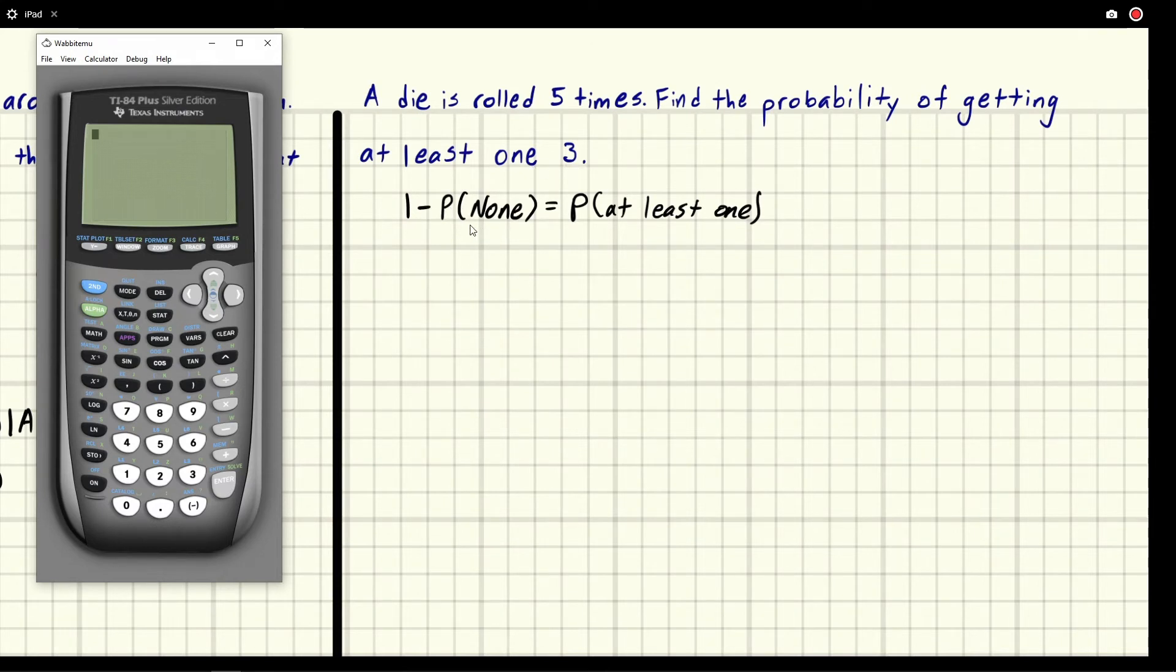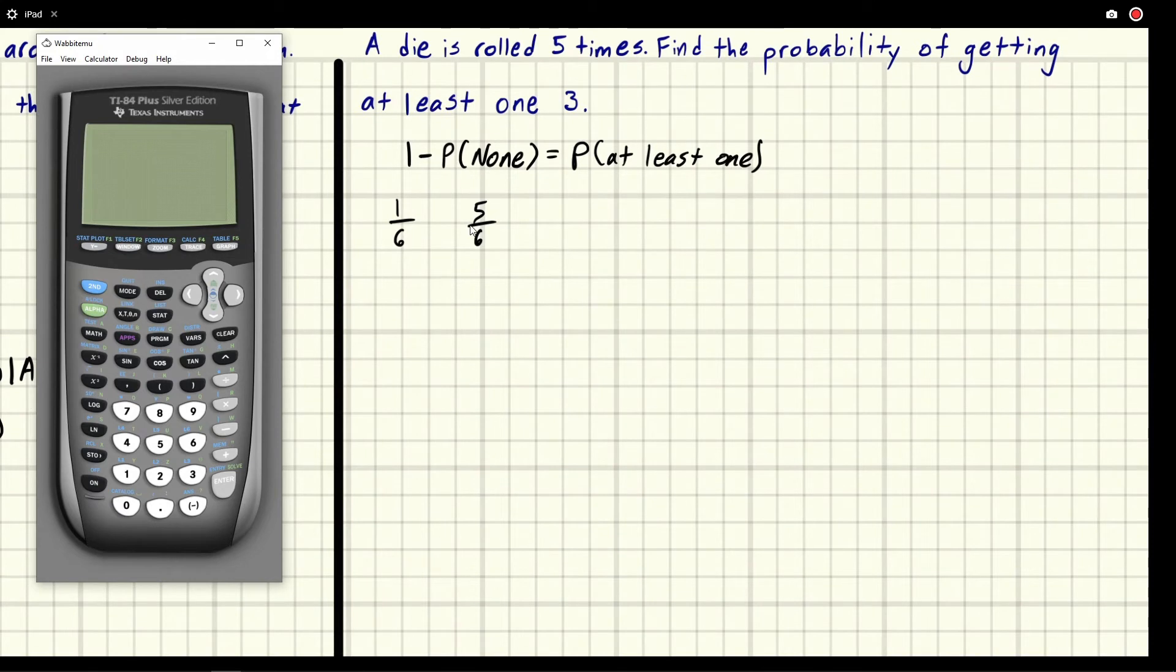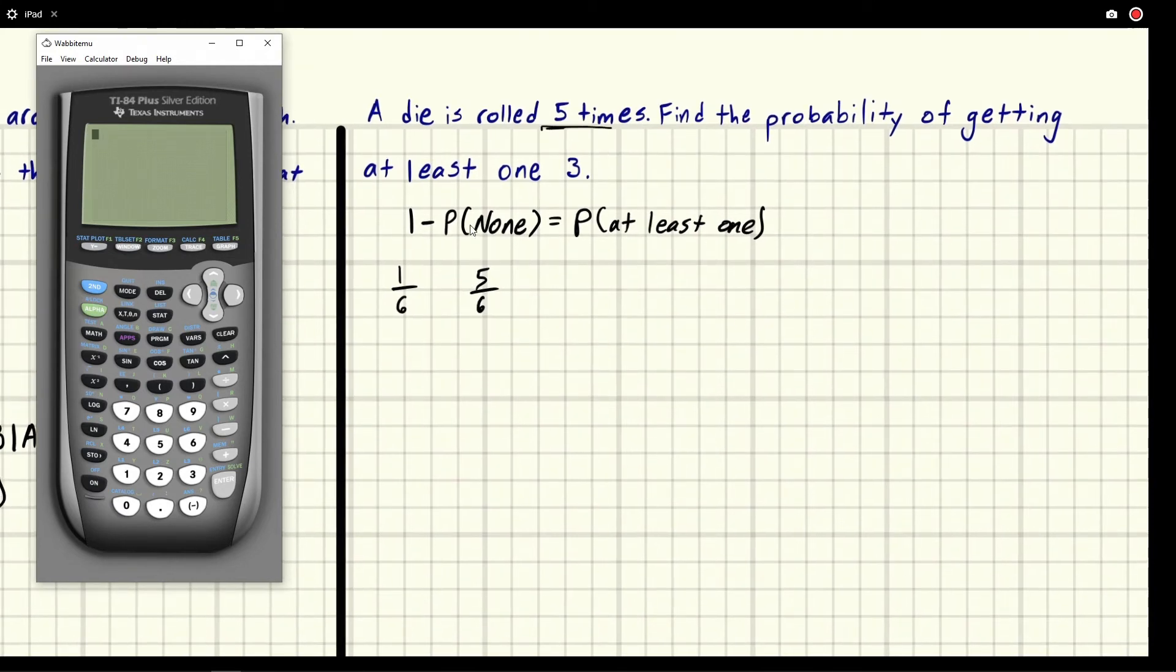So the chance of not getting a three, right? Well, there's a one out of six chance on a dice, assuming it's a six-sided die, that we get a three. So there's a five six chance we don't get a three. And to get no three, we have to do this thing five times. So we have to take this to the fifth power.